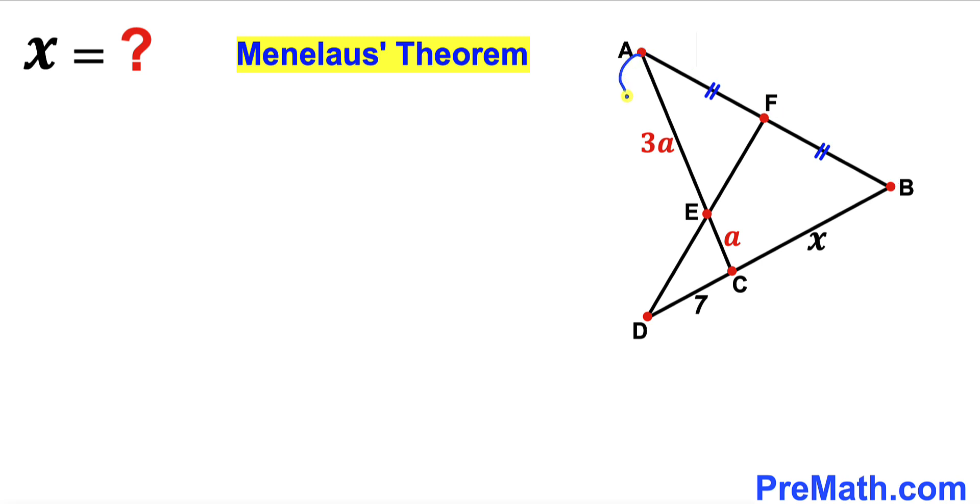This segment AE is 3A and this segment EC is A, and furthermore this segment CD is 7 and this segment BC is X.